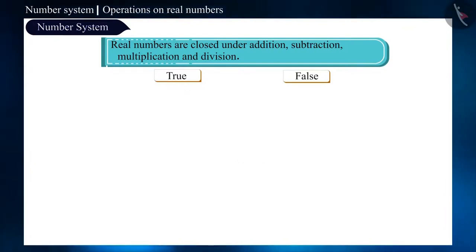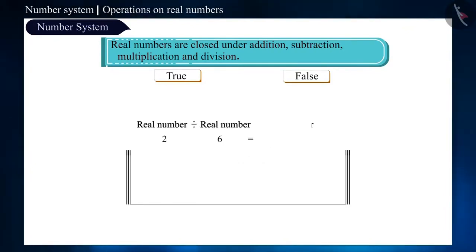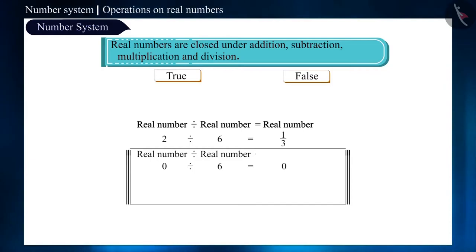Now let's try for division. 2 and 6 both are real numbers. On dividing the 2, we get 1 by 3 which is also a real number. Friends, now in the place of 2, if we keep 0 and divide it by 6, we get 0 which is also a real number.